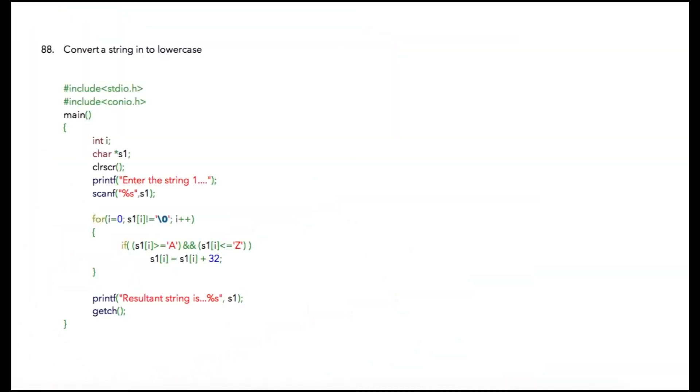In the next program we are going to convert a string into lowercase. The only difference here is in this block where we are going to check for occurrences of capital letters A till Z. If we find any capital letters, then we are going to add it with 32.